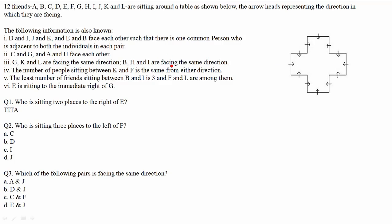So to note: D and I are facing each other, J and K are facing each other, and E and B are facing each other. Moving to the second point: C and G, and A and H, also face each other — this is just about facing. Multiple possible positions exist for each pair.